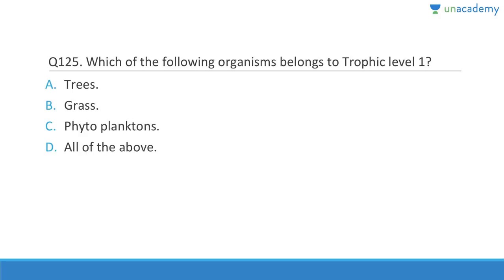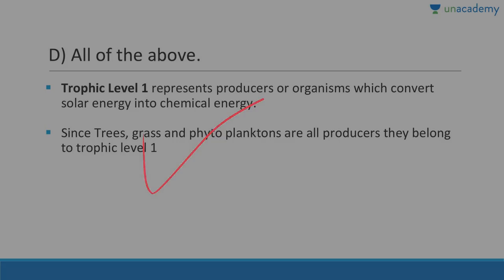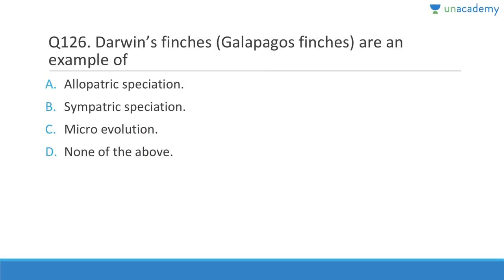Question 125: Organisms at trophic level one are producers — trees, grass, and phytoplankton are all producers and belong to trophic level one. These organisms convert solar energy into chemical energy through photosynthesis.